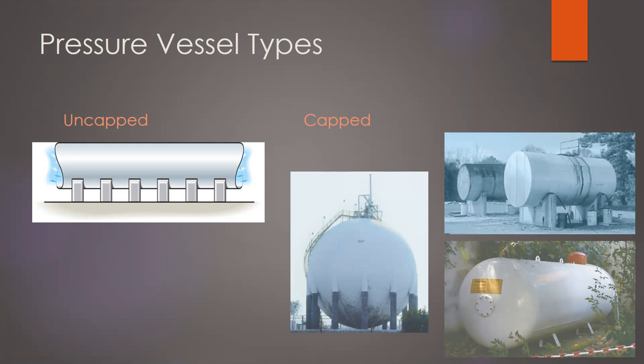In particular, we would call a long pipe an uncapped pressure vessel. If the pipe is long enough that what's happening at the ends isn't affecting the region we're looking at, we call that an uncapped pressure vessel.